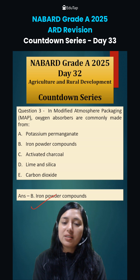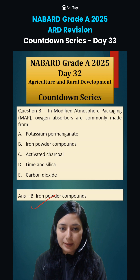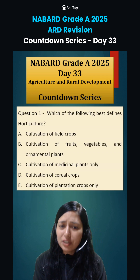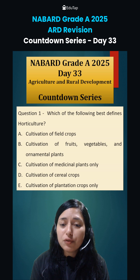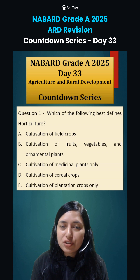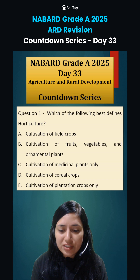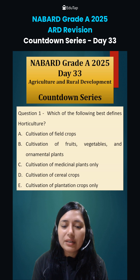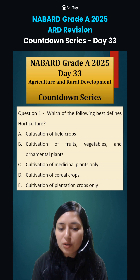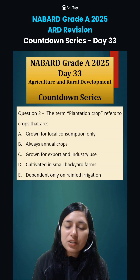Those were your answers of Day 32. Let us now see the questions of Day 33. First question: which of the following best defines horticulture? Your options are: cultivation of field crops; cultivation of fruits, vegetables and ornamental plants; cultivation of medicinal plants only; cultivation of cereal crops; or cultivation of plantation crops only.